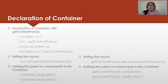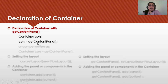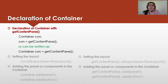How are we going to declare a container? For the declaration of container with getContentPane, we have the keyword Container with a capital C, followed by a reference or object name — in this example we use 'con'. So 'con' is equal to getContentPane. Or it can be written as: Container con = getContentPane. We'll declare this first before we set the layout.